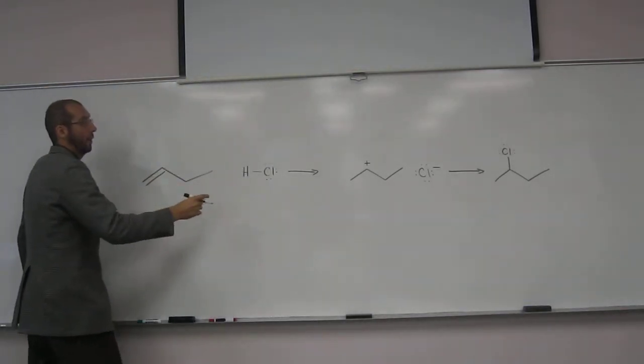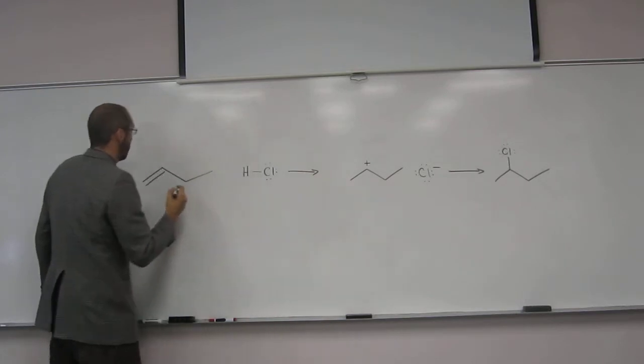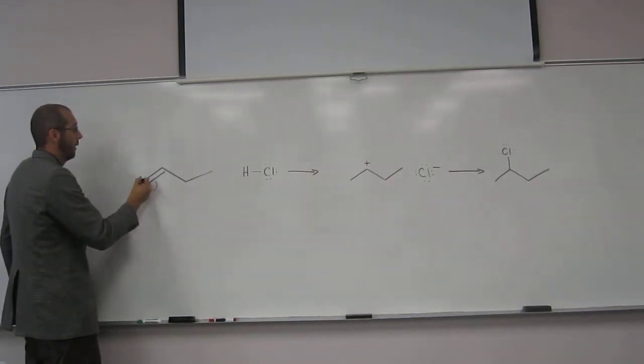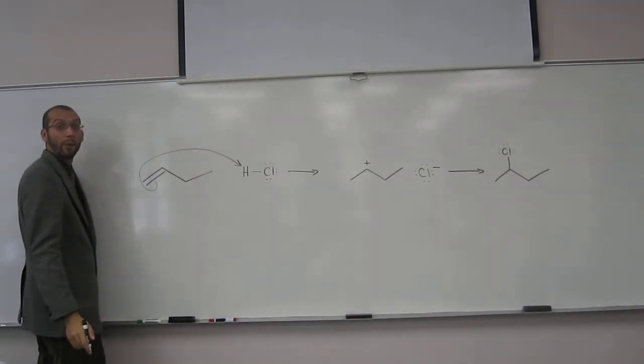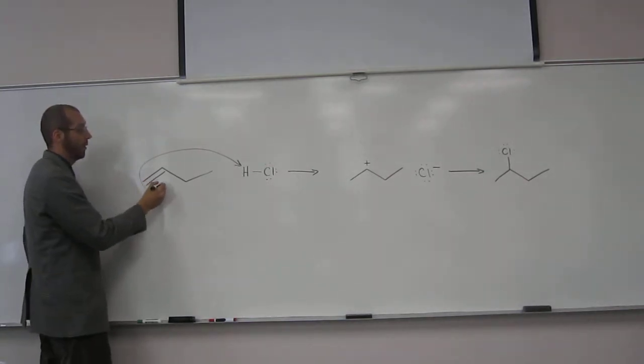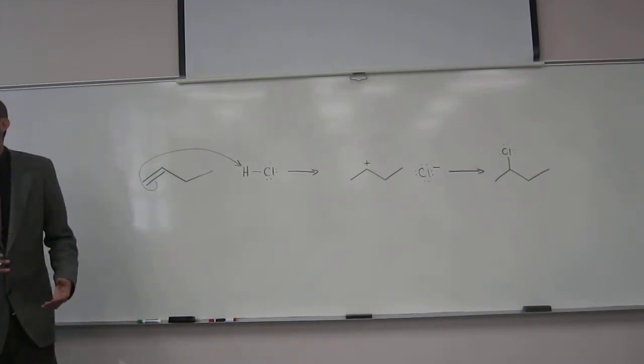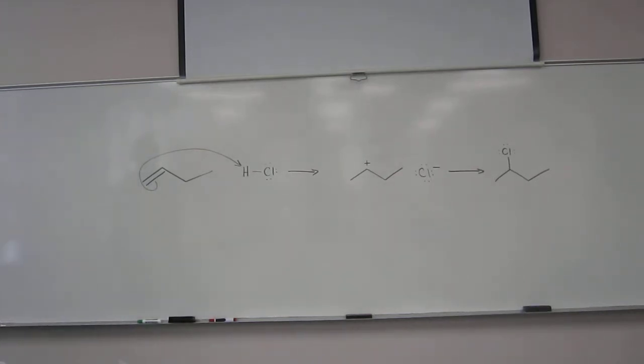So in this particular one, the hydrogen is going here. So what I want you to show is that arrow going through that particular carbon there, as opposed to going to the other carbon. Because that hydrogen could have gone on either one of those carbons. Do you guys understand what I'm saying? So we want to show exclusively which carbon it's going to.